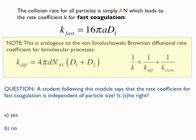There's an interesting question. Someone said that the rate coefficient for fast coagulation is independent of particle size. Is that true or not? Think about this: you have this equation, 16π times the radius times the diffusion coefficient. Is k independent of size, yes or no?